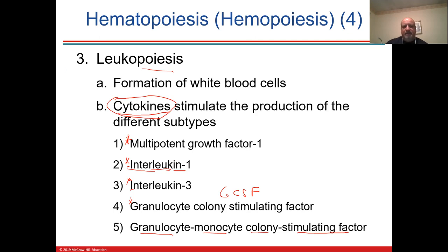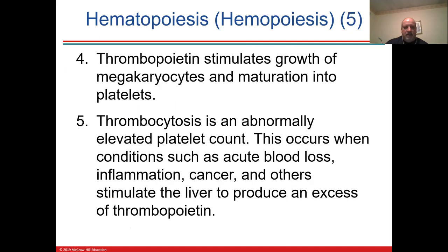There is also some leukopoiesis — like T cells — that can be made in the spleen as well. The thymus and lymph nodes are about storing T cells and lymphocytes, which are white blood cells.